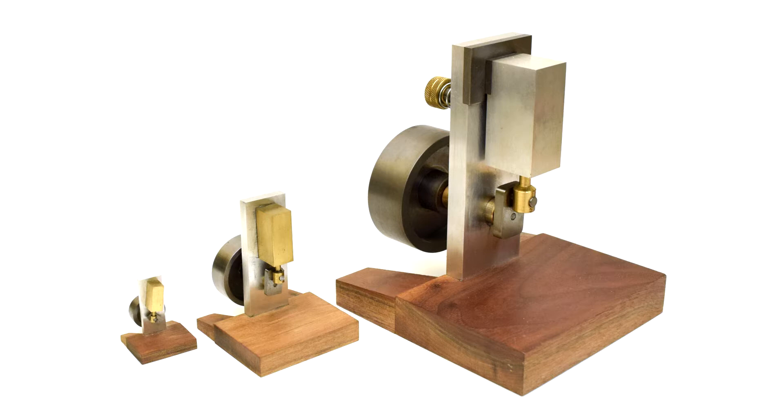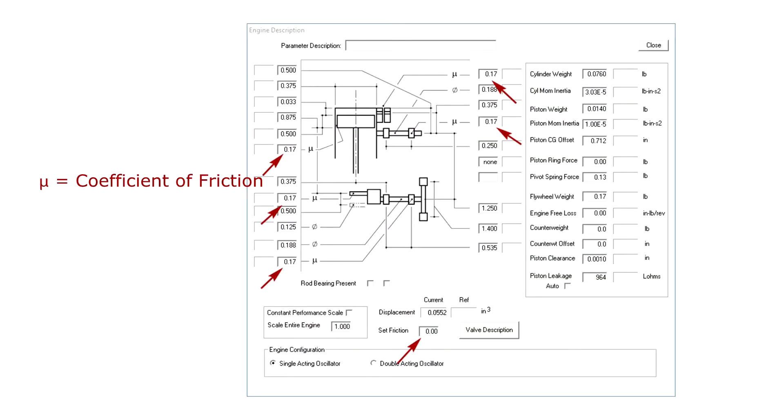Since friction is the most significant loss that decreases engine delivered power for this sort of engine, and coefficient of friction is a significant parameter in the simulation, it seemed reasonable to collect some coefficient of friction data for the materials and lubricants used for the baseline.